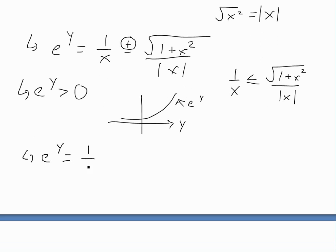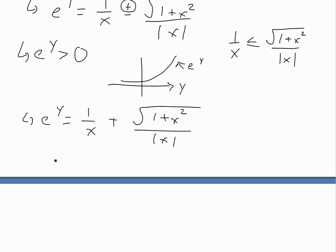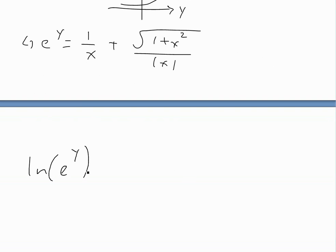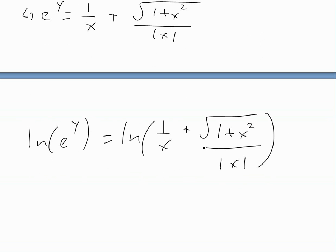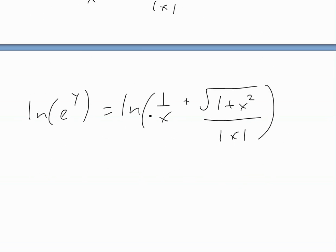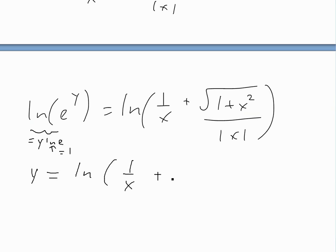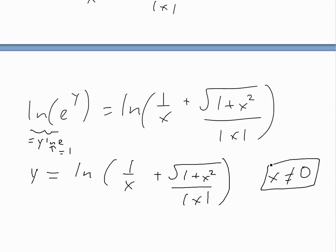So e to the y equals one divided by x plus square root of one plus x squared, all divided by absolute value of x. Taking the natural log of both sides, using the property that ln of e to the y equals y times ln(e) equals y, we get y equals ln of one divided by x plus square root of one plus x squared, all divided by absolute value of x, where x cannot equal zero. This completes the proof.